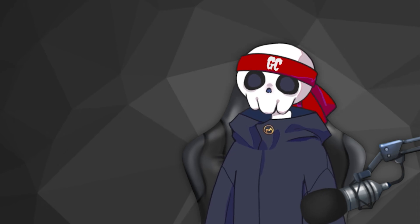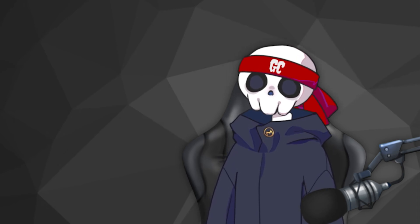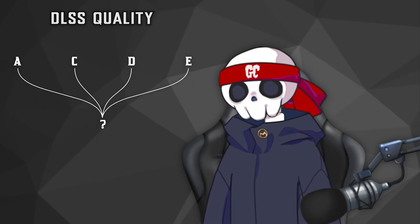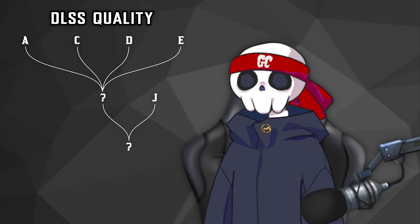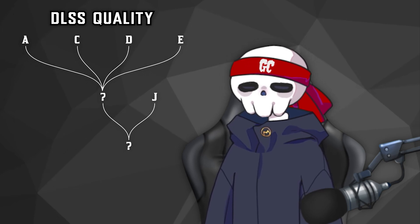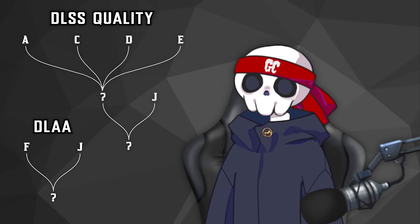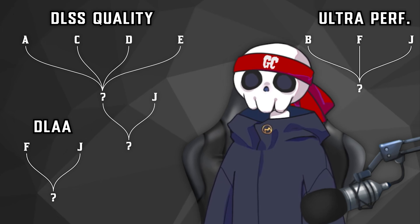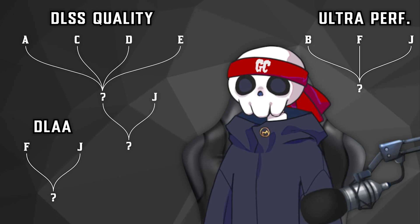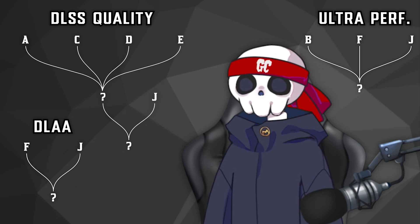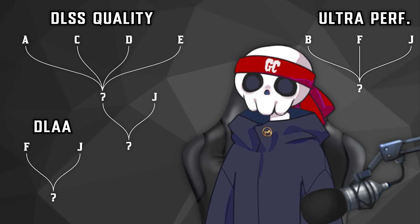Here is the roadmap: first we'll compare Presets A, C, D, and E on DLSS Quality mode. Then we'll compare the best preset among them with the transformer model, meaning Preset J. Then we'll compare Preset F with J on DLAA mode. Finally, we'll compare Preset B with F and J on Ultra Performance mode, because B only improves the quality of Ultra Performance.